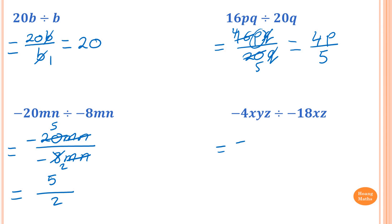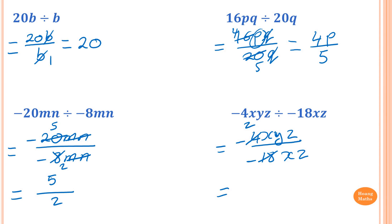Negative 4xyz over negative 18xz. Both are negative, so the result becomes positive straight away. 4 and 18 are both divisible by 2: half of 4 is 2, half of 18 is 9. Cancel z and x. So the answer is 2y over 9.